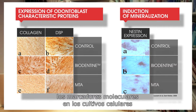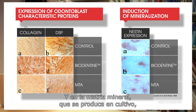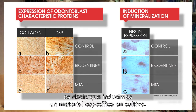When we examined the molecular markers in the cell cultures, we noticed that we have all the markers of odontoblasts. And in the mineral matrix being produced in culture, we also noticed markers of dentin, which means that we are inducing specific dentin-like material in culture.